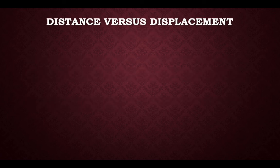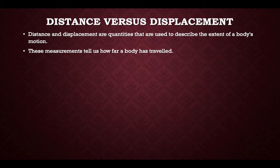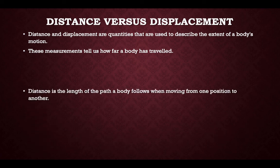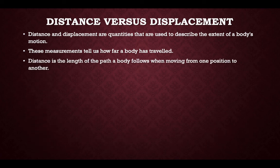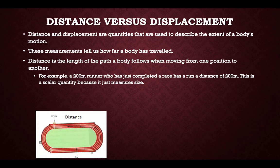Distance versus displacement. Distance and displacement are quantities used to describe the extent of a body's motion — they tell us how far a body has travelled. Distance is the length of the path the body follows when moving from one position to another. For example, a 200m runner who has just completed a race has run a distance of 200m. This is a scalar quantity because it measures size.